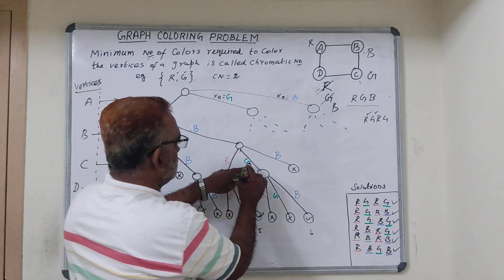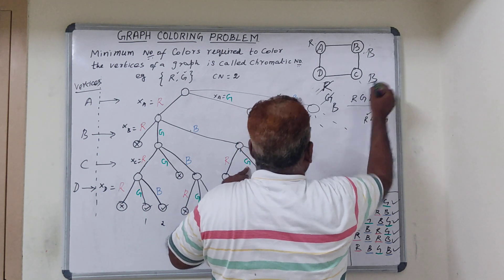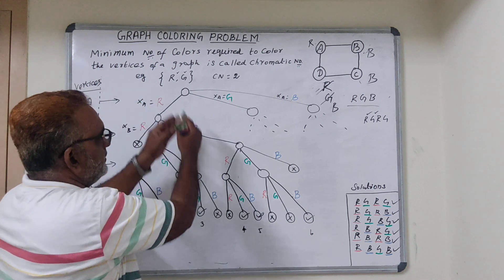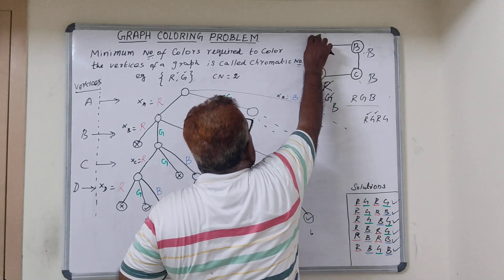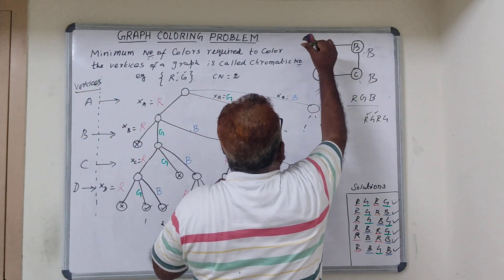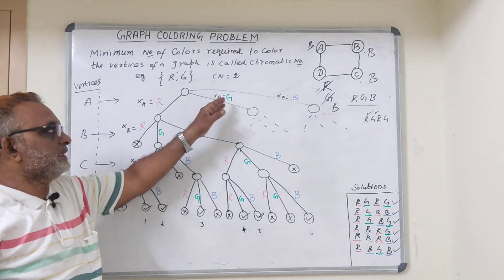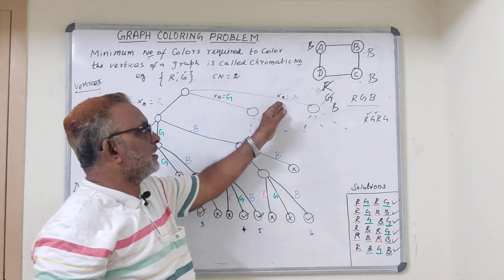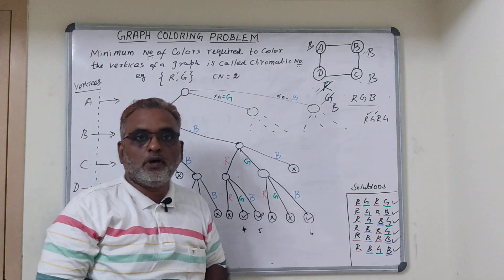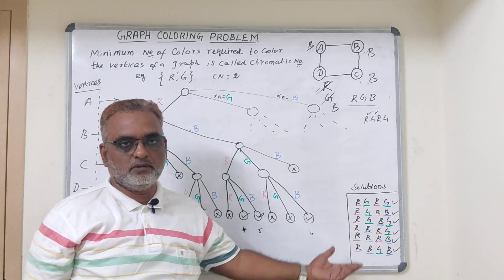So that is what we have done for XA equal to red. Similarly, we consider A as green and explore the tree, then consider A as blue and again explore. We will get different possible solutions for each starting color of A. In total, I have identified six possible solutions. I hope you understand the problem, how to draw the state space tree, and how to obtain the solutions. Thank you.